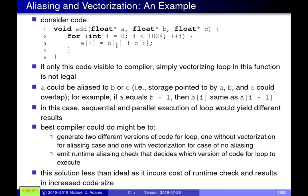Since the dependency distance is one, the only safe vectorization factor would effectively be one — meaning scalar computation. If we can't assume aliasing doesn't happen, it precludes us from vectorizing this loop in the most straightforward way. Some compilers may still vectorize if profitable by inserting a runtime check: does the memory for a, b, and c overlap? The compiler can insert code to test this at runtime.